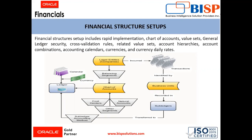Before understanding what are the financial structure setups required in Oracle Fusion applications, let us understand the figure which illustrates the flow of enterprise structure setup. The legal entities incur transactions which are identified by the business units with the business functions assigned to them, and these transactions are recorded in the subledgers which are transferred to ledgers using the subledger accounting methods.